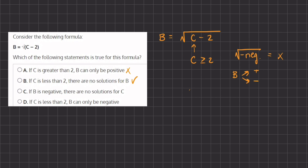Now let's see why C and D are incorrect. Statement C says: if b is negative, there are no solutions for c. That is also incorrect because if b is negative, that means there has to be a solution for c. If b is, let's say, negative 2, and we have inside the radical c minus 2, then c will have to equal 6. Writing this out, we'll have the square root of 4, which always gives us two answers: negative 2 or positive 2. That means if we have an answer for b, there also has to be a solution for c. So C is incorrect.